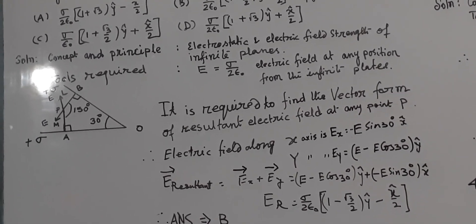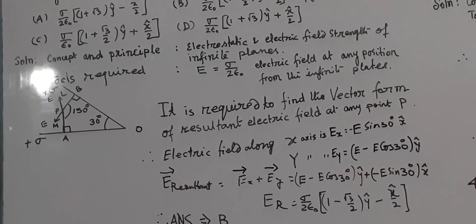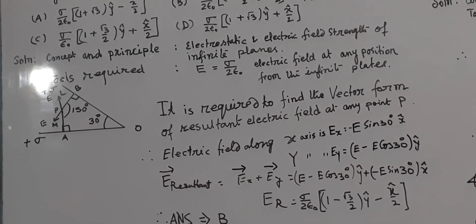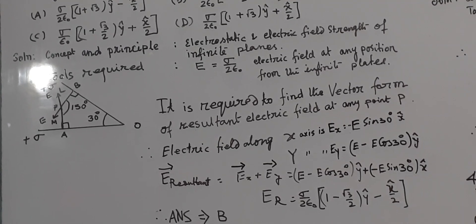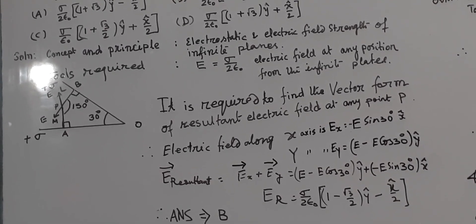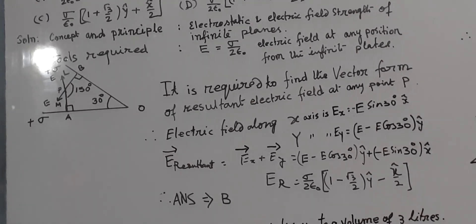Summing these two, we will get resulted Er, that is, sigma by twice epsilon naught, within bracket, 1 minus root 3 by 2, unit vector y minus half x unit vector. So, answer B is matching. We have to mark B.